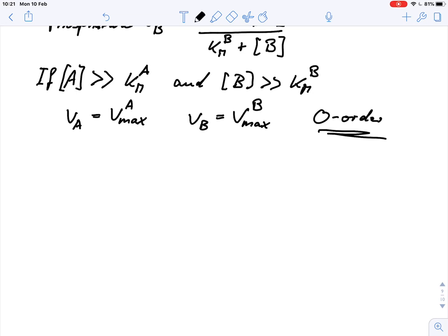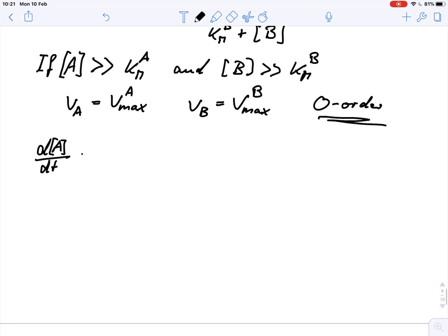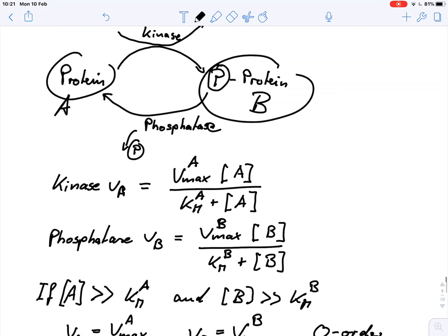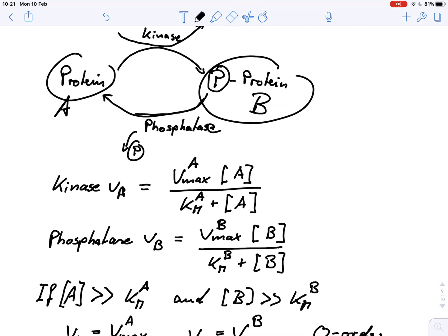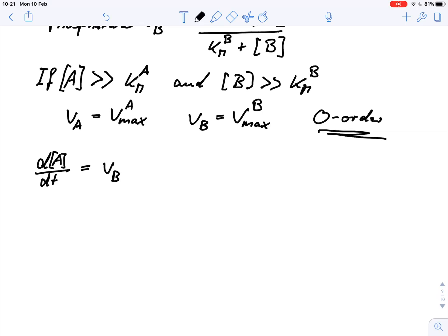Now, what we can do is we can write a rate equation. We can say our change in A per time unit would be Vb minus Va. And that is always the case for the change in A.